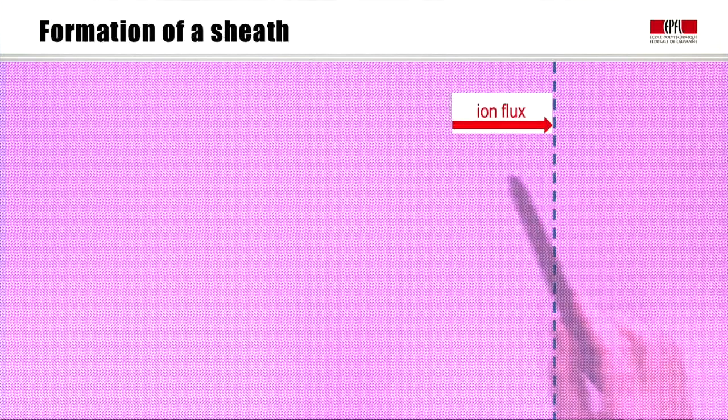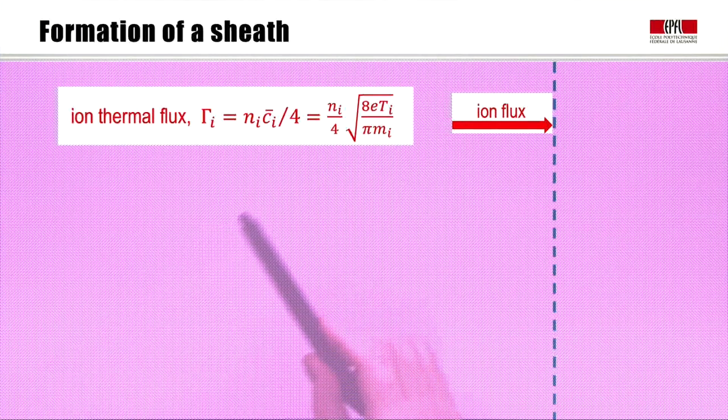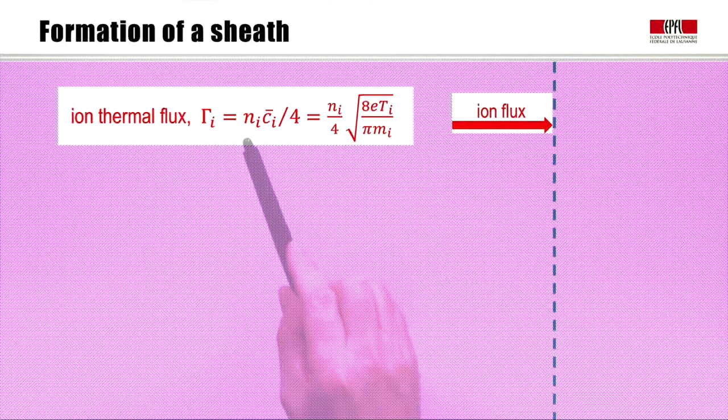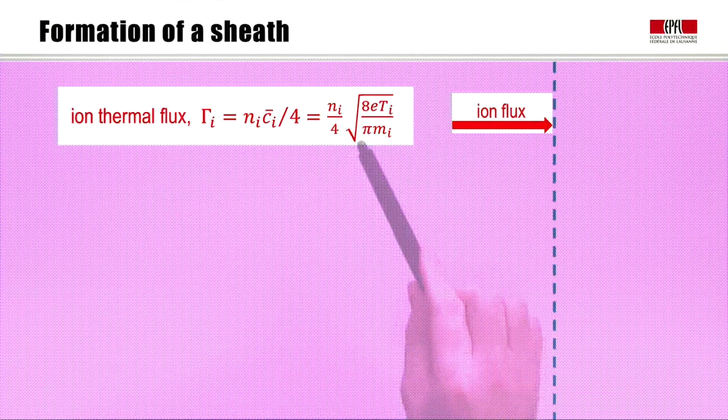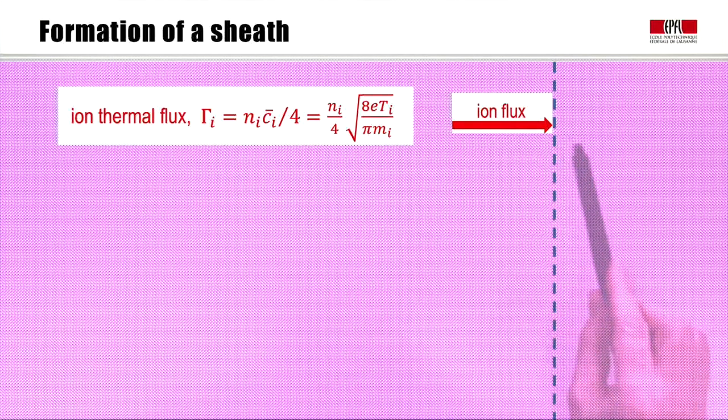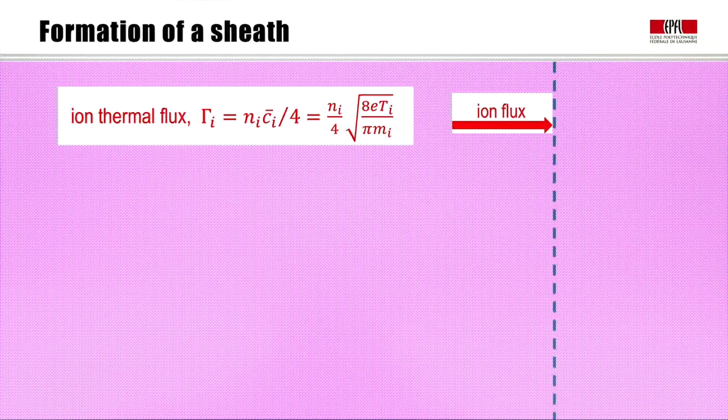Now let's consider how a sheath can form in a plasma. First consider a virtual or imaginary surface in the plasma. There is an ion flux crossing this surface given by the ion thermal flux from kinetic theory. This is simply the ion density times the ion thermal speed divided by 4. This ion flux can cross in a uniform plasma because there is the same ion flux coming back the other way.